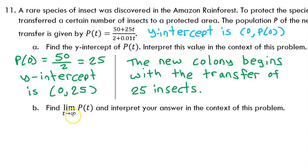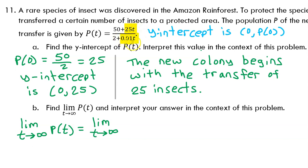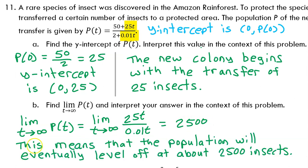Part b: find the limit as t approaches infinity of p of t, and interpret your answer in context. The limit as t approaches infinity of p of t is the same as the limit of the ratio of the leading terms — focus on 25t and 0.01t. So the limit of 25t over 0.01t: the t's cancel, leaving 25 divided by 0.01. Dividing by 0.01 is the same as multiplying by 100, so this equals 2500. This means the population will eventually level off at about 2,500 insects.